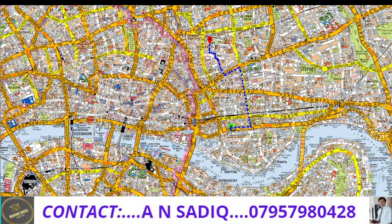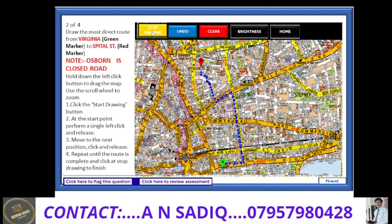Now we have finished drawing our route. Don't forget to press the stop drawing button at the end, then you can go to the next question. Our route is complete, so I will press the stop drawing button — the same button now becomes the start drawing button again. If you want to review or edit the route at the end, you can press the start drawing button again and follow the same instructions. That's the end of today's lecture — thanks a lot and good luck.